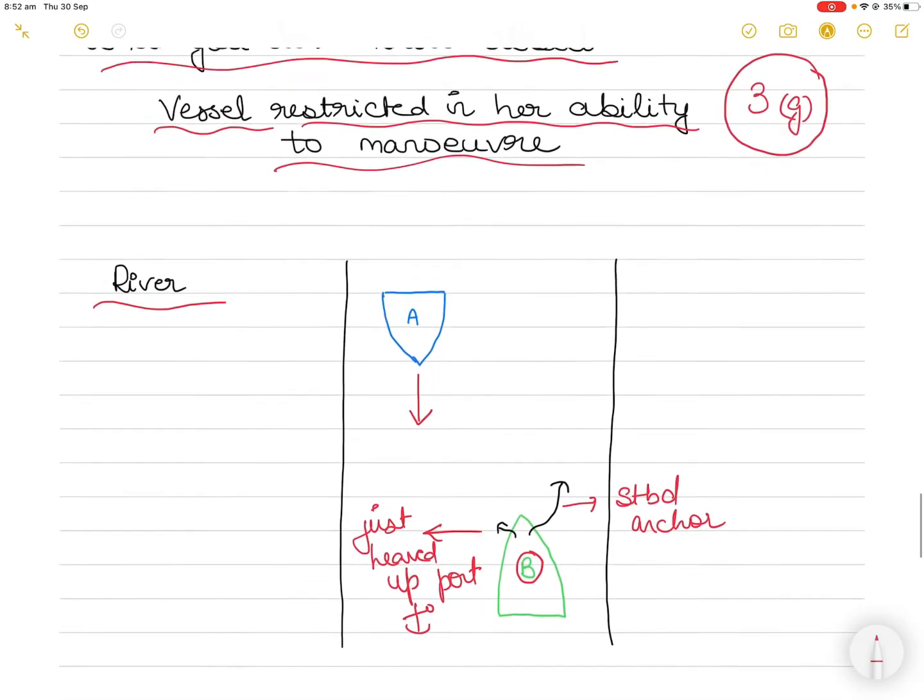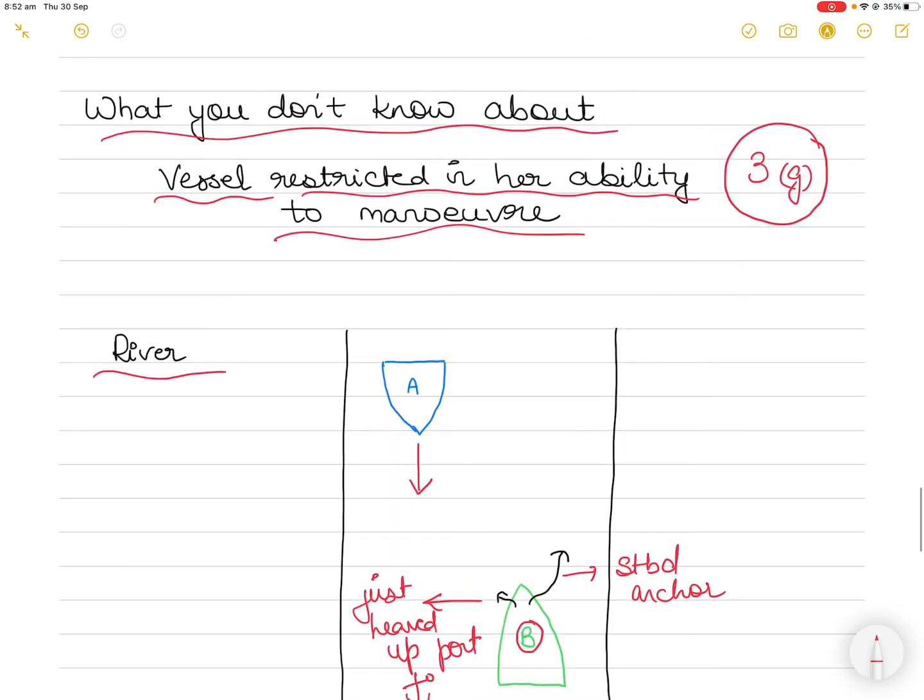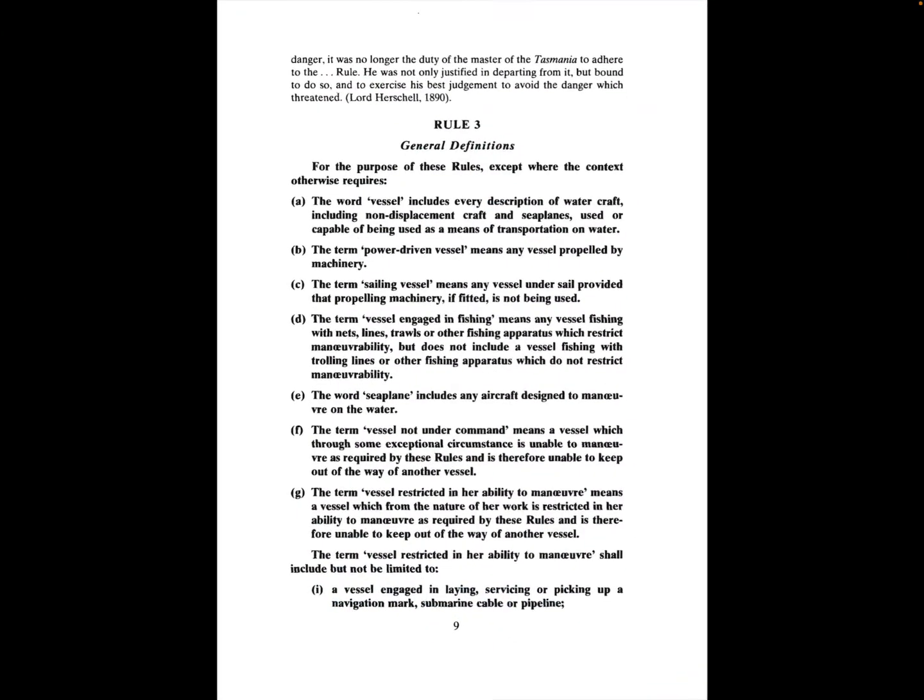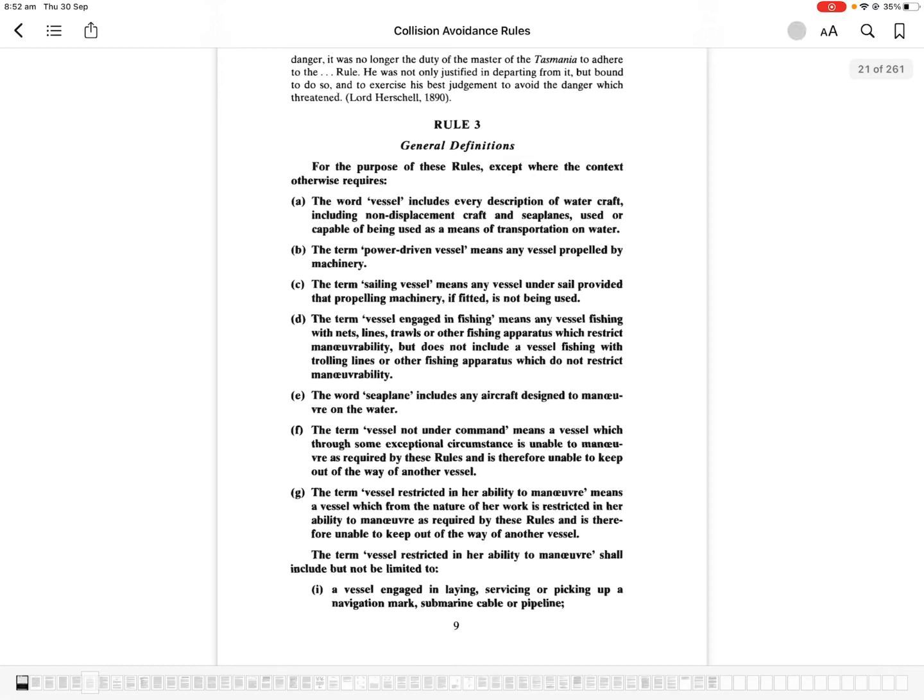Which explains what is a vessel restricted in her ability to maneuver. So if I go into Rule Number 3, as you can see here, I have the rule number three open in front of me, and this is Rule Number 3. It provides general definitions. So somewhere here, Rule Number 3G explains the term 'vessel restricted in her ability to maneuver.'